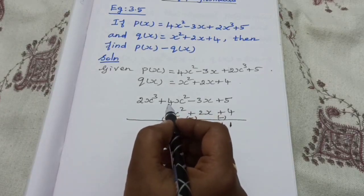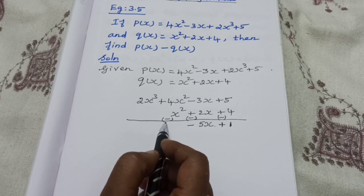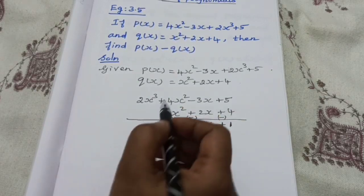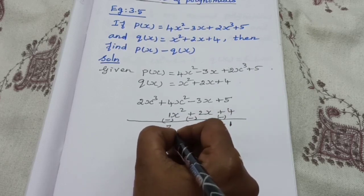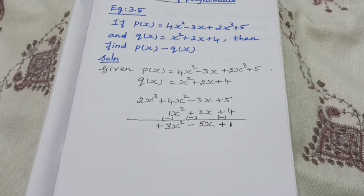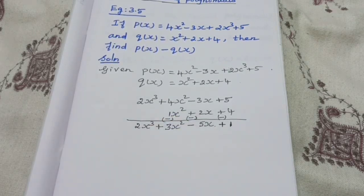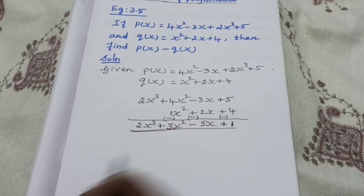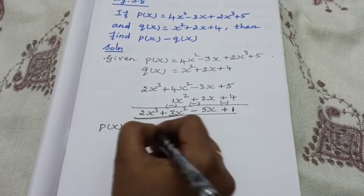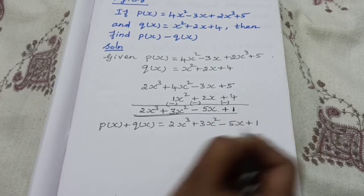Constant: 5 minus 4 = 1, greatest number sign is plus, so plus 1. For x terms: minus 3x and minus 2x — both minus, so add: 3 + 2 = 5x, common sign minus, giving minus 5x. For x²: 4 minus 1 = 3x², sign is plus. x³: 2x³ has no corresponding term, so write 2x³. Answer: P(x) − Q(x) = 2x³ + 3x² − 5x + 1.